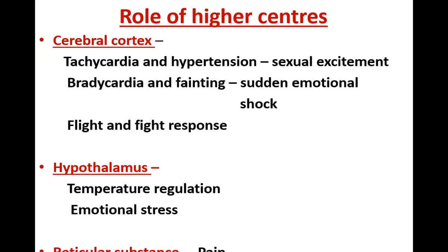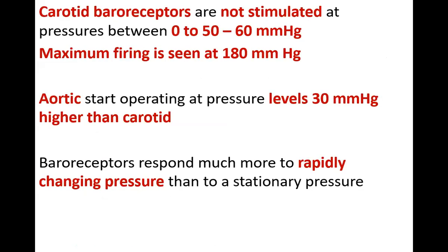There are two types of pain: superficial pain (sharp pain) and visceral pain (from inside the viscera). Whenever there is visceral pain, it results in fainting, nausea, and decrease in blood pressure. Whenever there is superficial pain like a pin prick or cut, it results in increase in heart rate and increase in blood pressure.